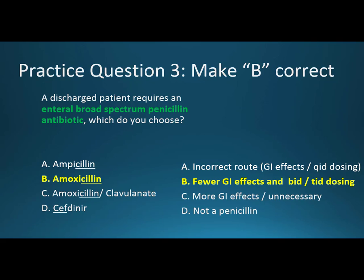Amoxicillin with clavulanate is unnecessary here — clavulanate tends to cause significant GI distress, and we don't need it yet since we haven't confirmed beta-lactamase resistance. Cefdinir, because of the 'cef' stem, is not a penicillin, so that doesn't apply. Amoxicillin is the right choice.